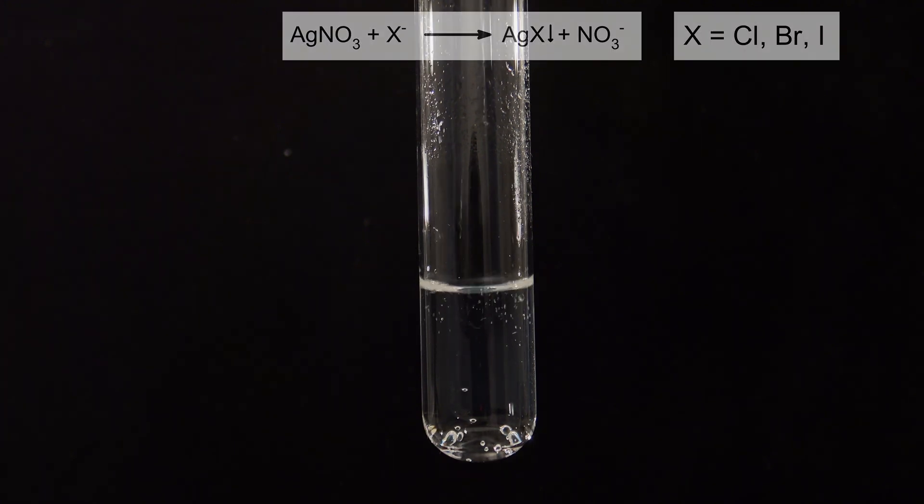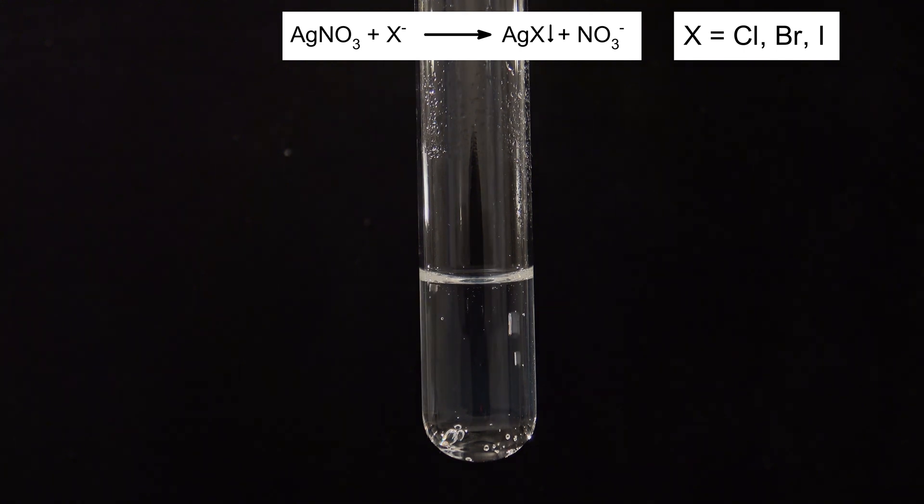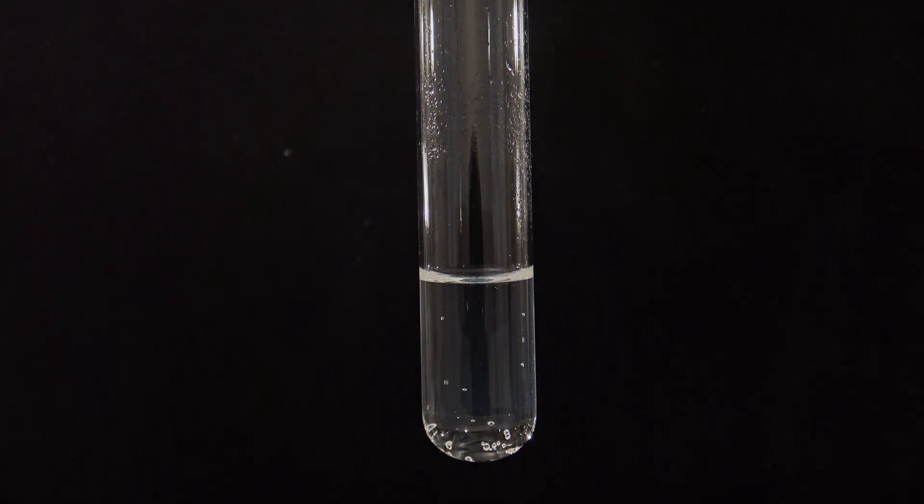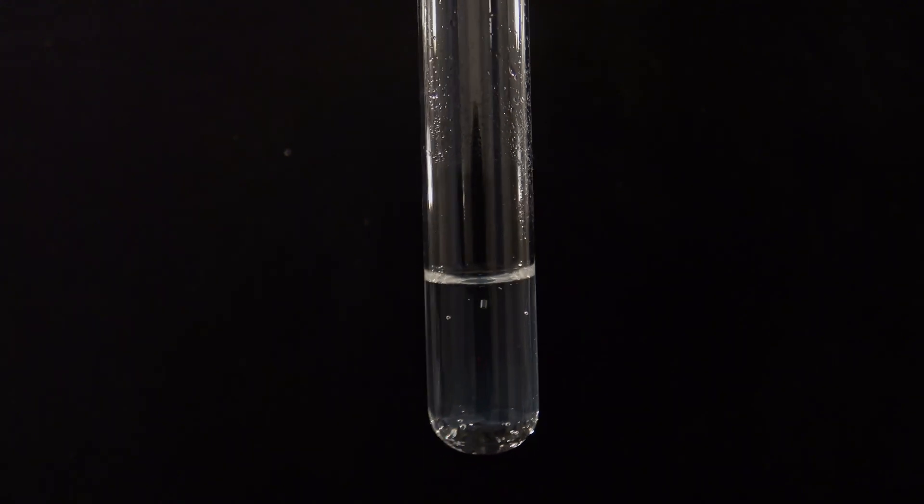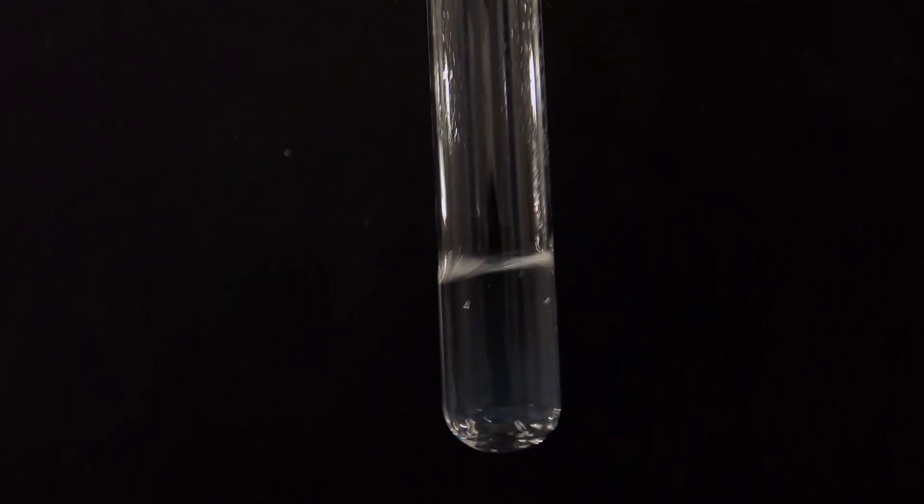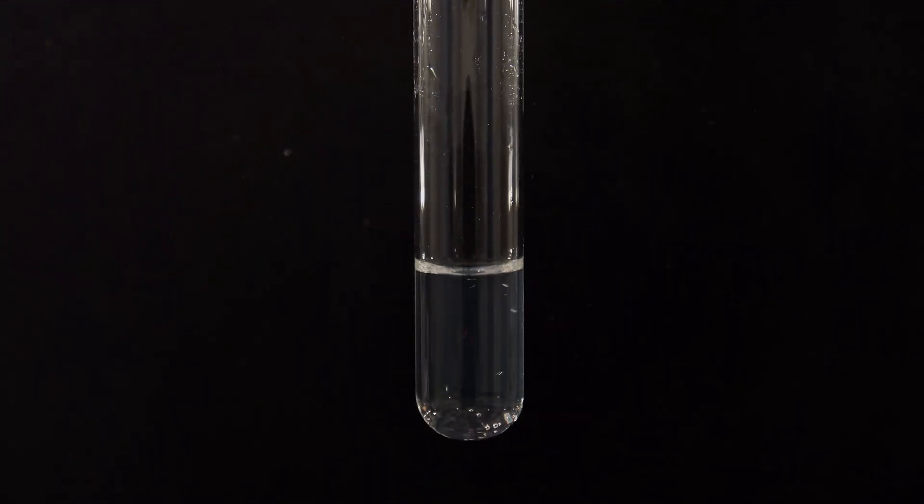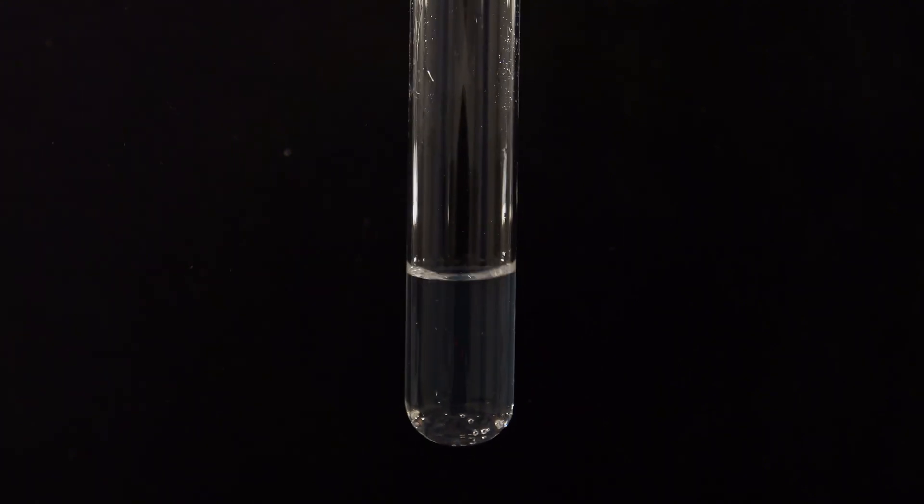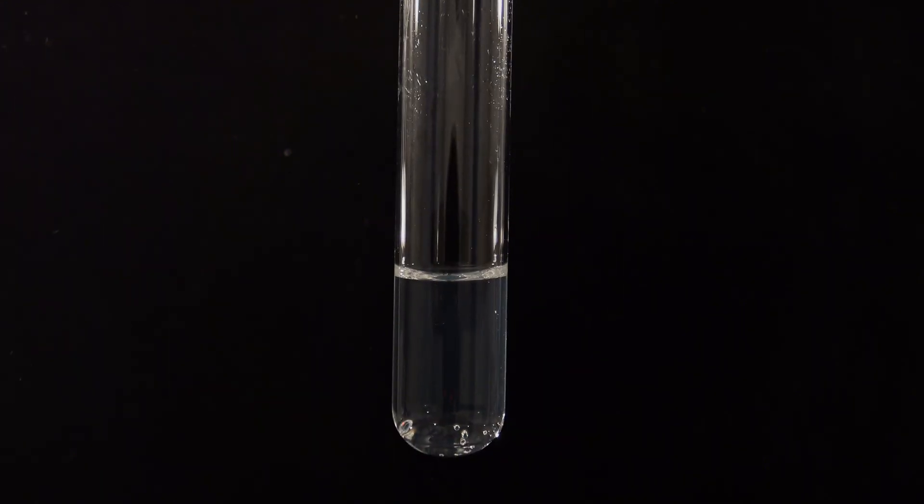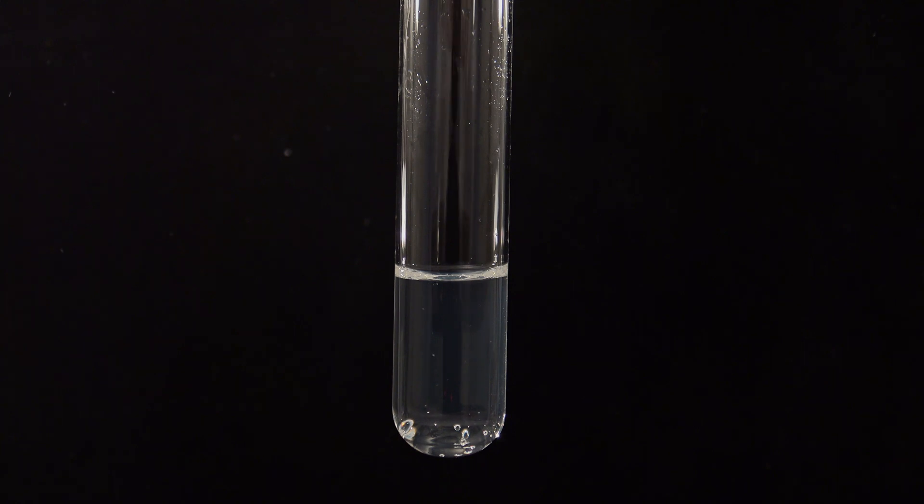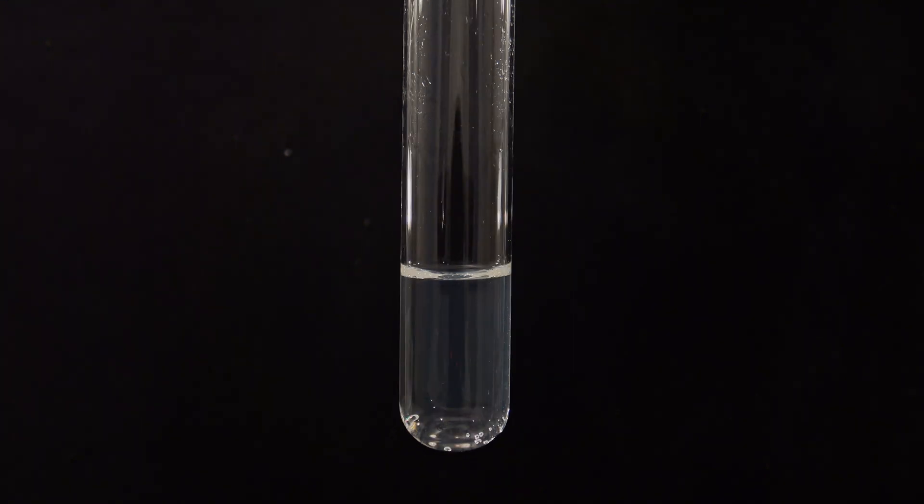Silver nitrate reacts with halide ions to form insoluble silver salts. Only a slight cloudiness became visible, but this is already a proof for the presence of halide ions. This can happen when too much nitric acid was added. That's why usually one or two drops of diluted ammonia are added to increase the amount of precipitate. The same effect could be observed when diluted ammonia was added in the next step.